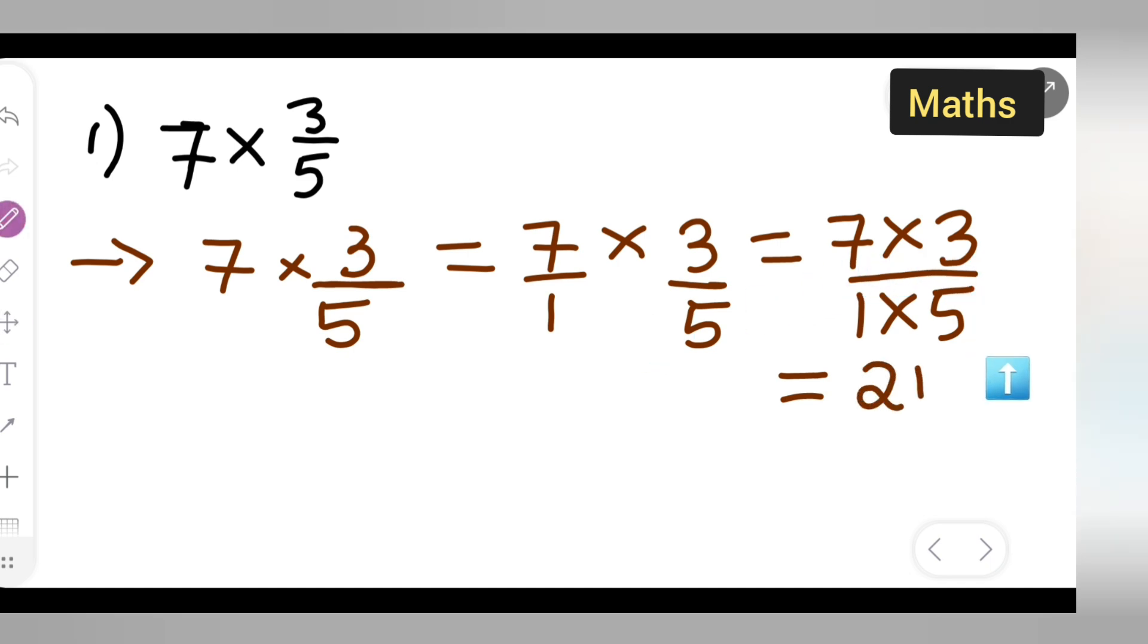So first what we have done is we have multiplied the numerator, 7 times 3 is 21, 5 times 1 is 5. So 21 upon 5.